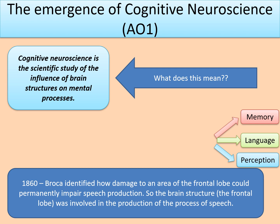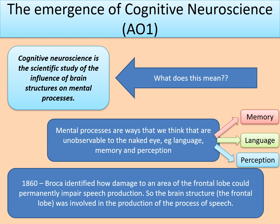The last part of the AO1 is the emergence of cognitive neuroscience. Cognitive neuroscience is the scientific study of the influence of brain structures on mental processes. Mental processes are ways of thinking that are unobservable to the naked eye — like language, memory and perception.